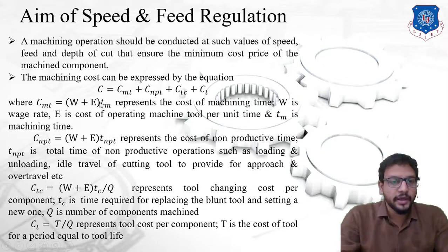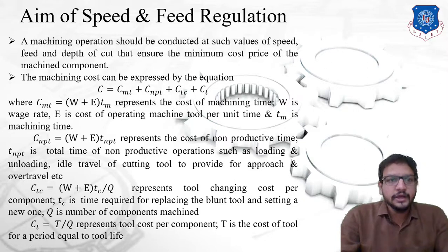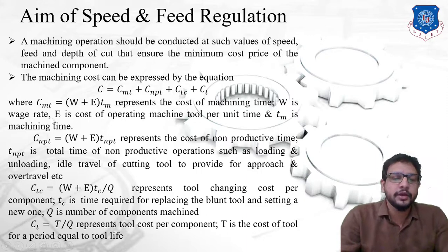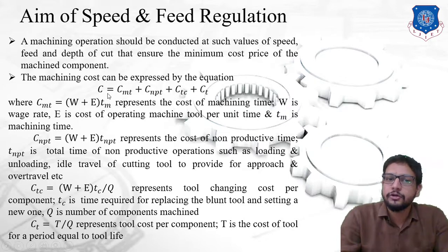The first term, Cmt, is given by the equation: Cmt = (W + E) × Tm, where W is the wages given to the operator in rupees per minute, E is the cost of operating the machine tool per unit time (cost per minute), and Tm is the machining time in minutes. During machining time we pay the worker as well as the cost of operating the machine tool, so the total machining cost is (W + E) multiplied by Tm.